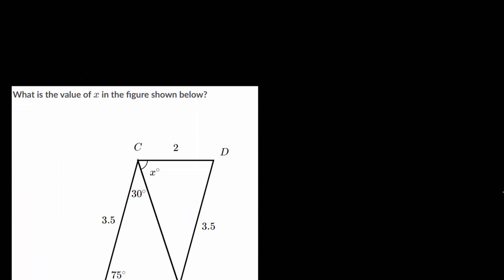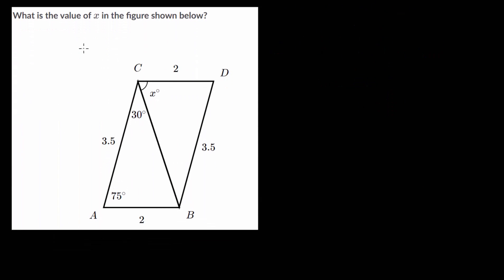Now let's look at another example problem where we need to figure out the value of x, which is a missing angle. Let's start by trying to figure out if these two triangles are congruent. We can notice that they share the 3.5 side length, and the two triangles also share the common side CB, so they share three sets of equal sides. We can use the side-side-side congruence postulate to prove the two triangles are congruent.